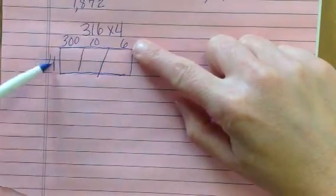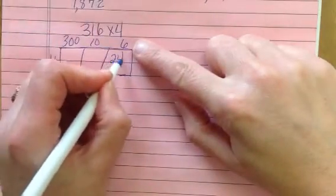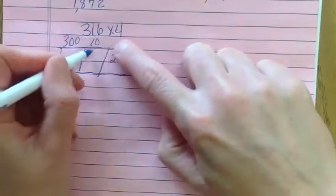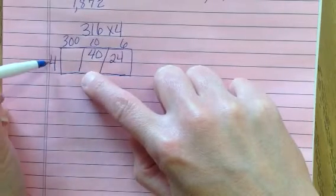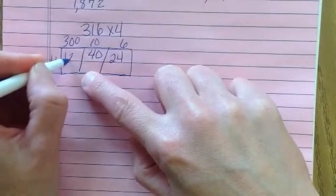6 times 4 is 24. 4 times 10 is 40. 300 times 4 is 1,200.